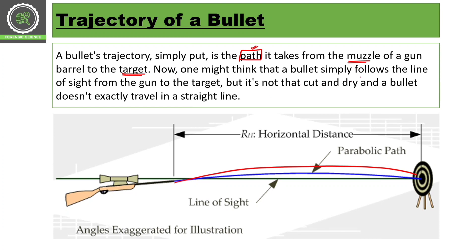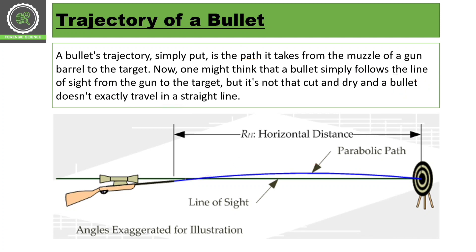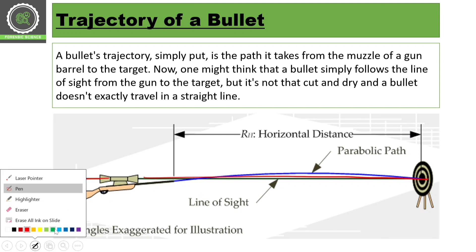Now one might think that a bullet simply follows the line of sight from the gun to the target, but it is not that cut and dry. A bullet doesn't exactly travel in a straight line. Many people think that the bullet travels in an exact straight line, but it does not.